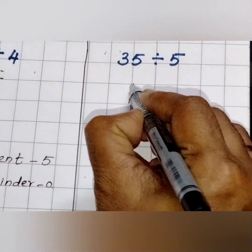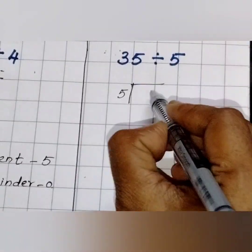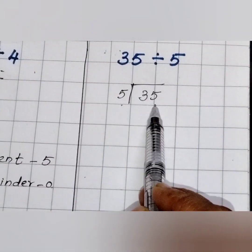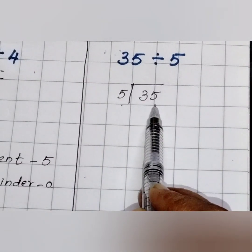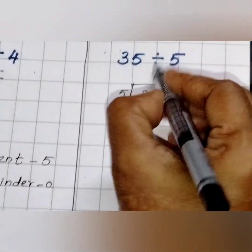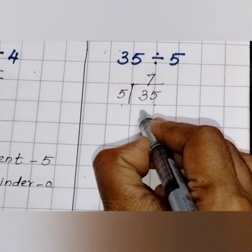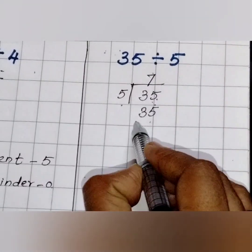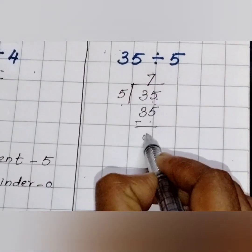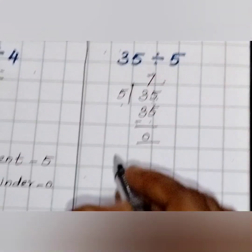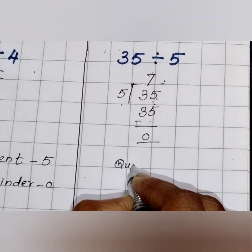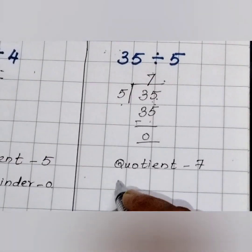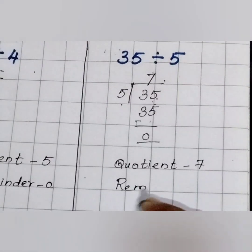Now let us divide 35 by 5. When 35 comes in the 5 table — 5 sevens are 35. 35 minus 35 is 0. The quotient is 7 and the remainder is 0.